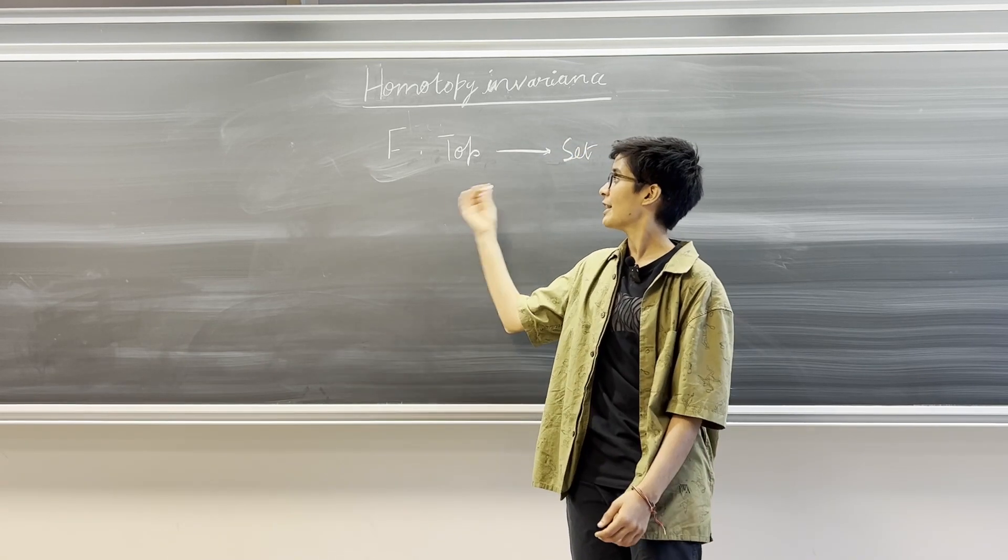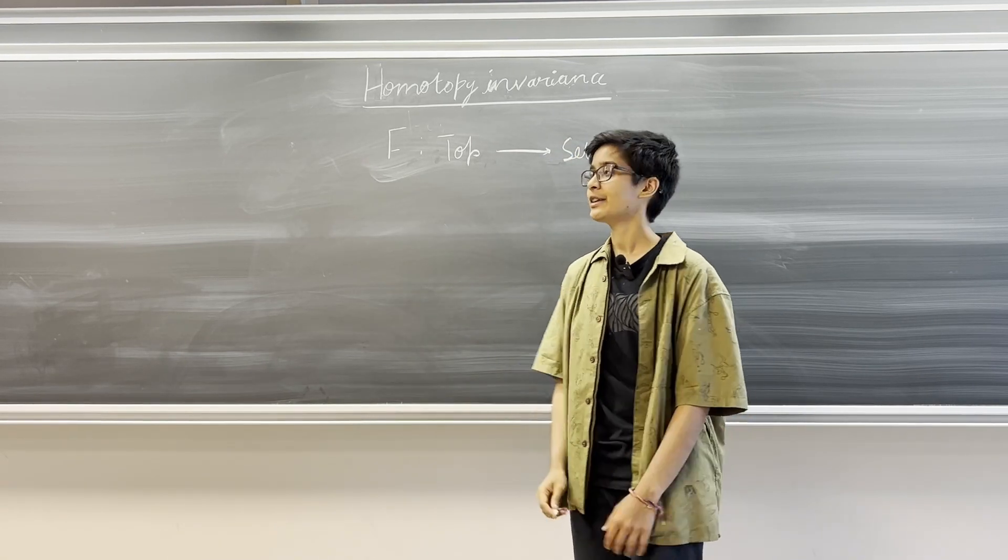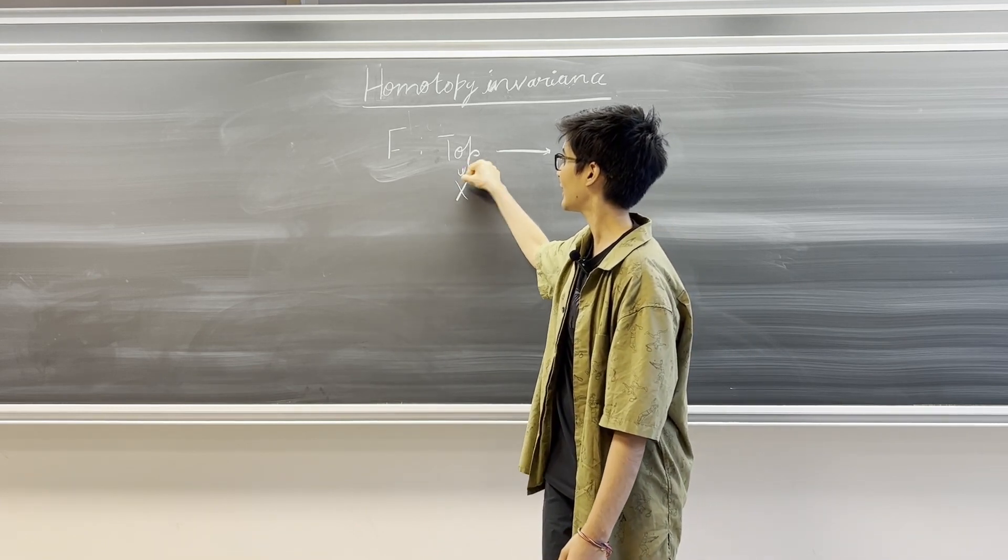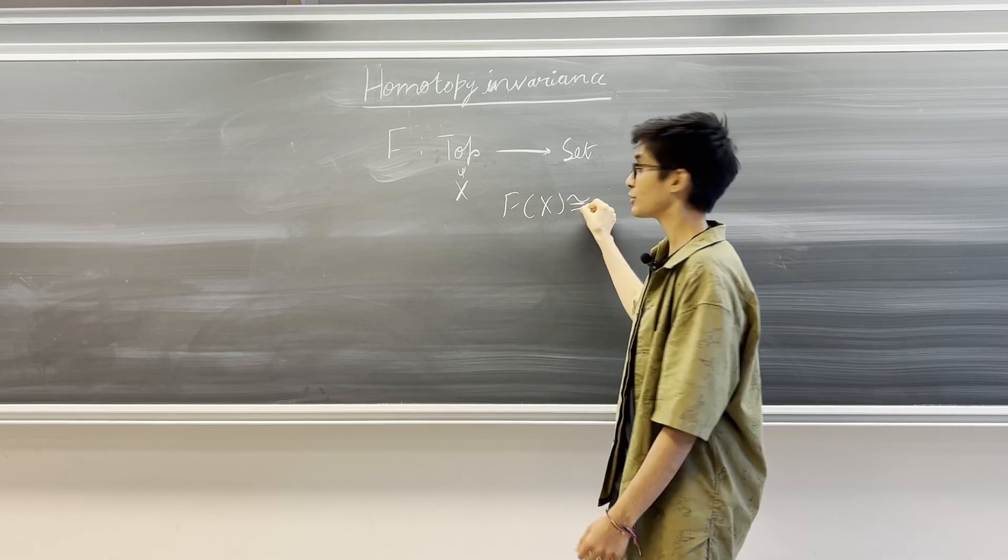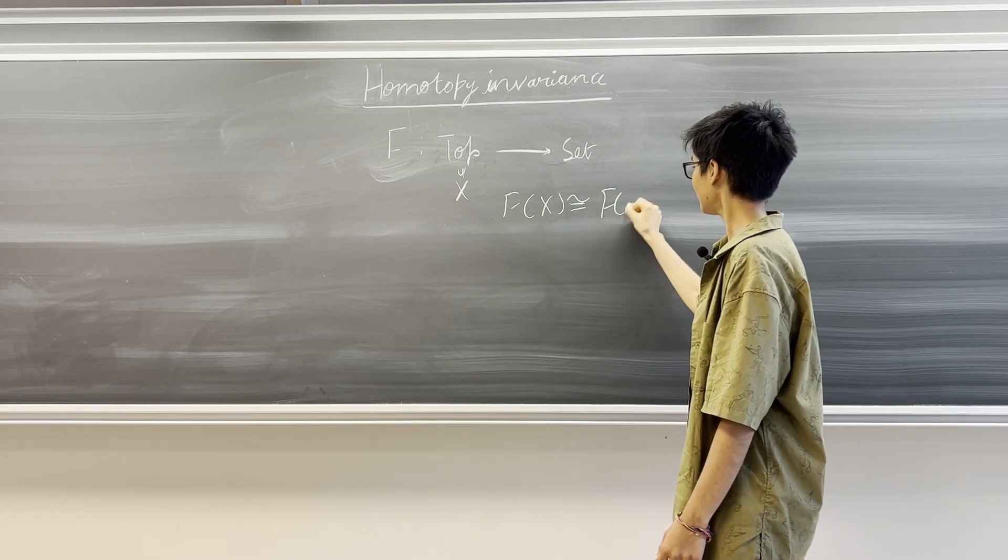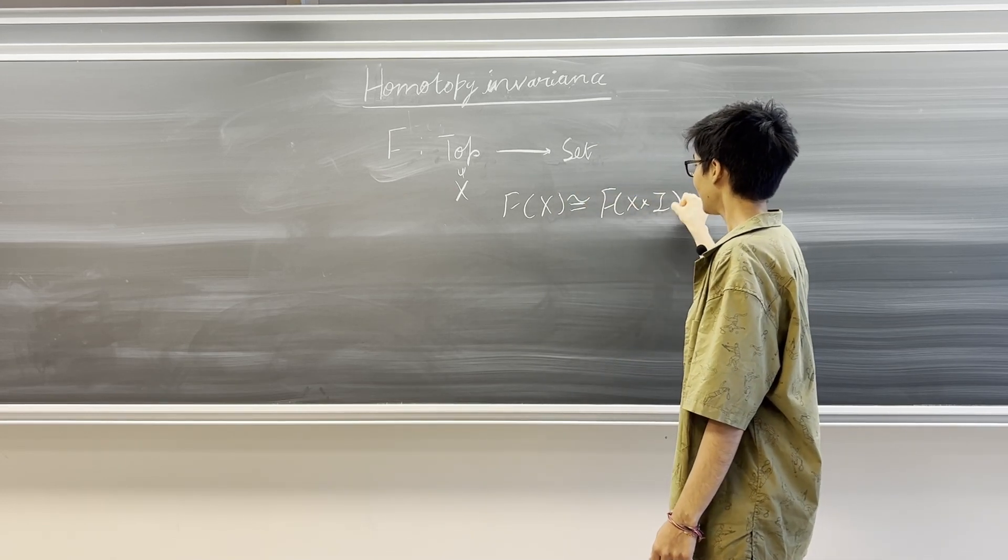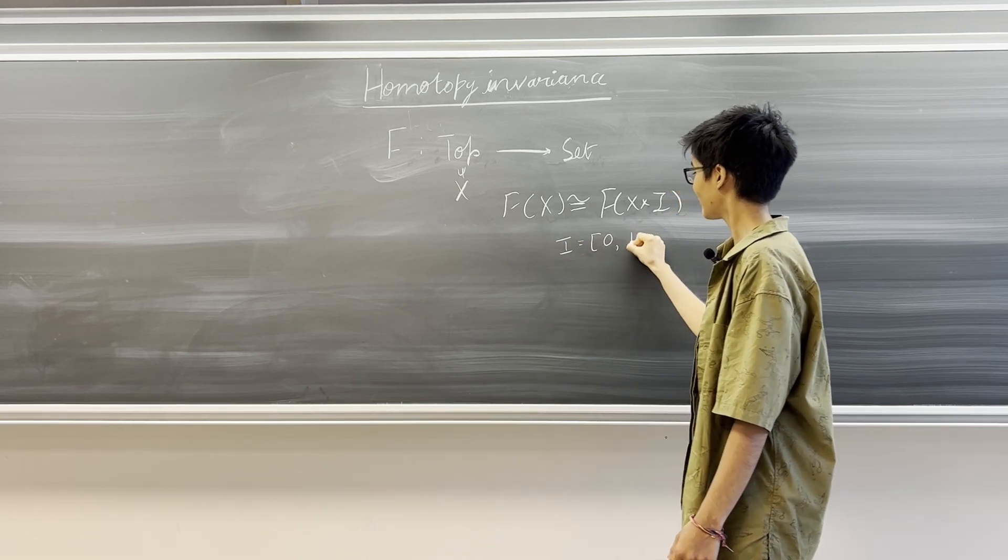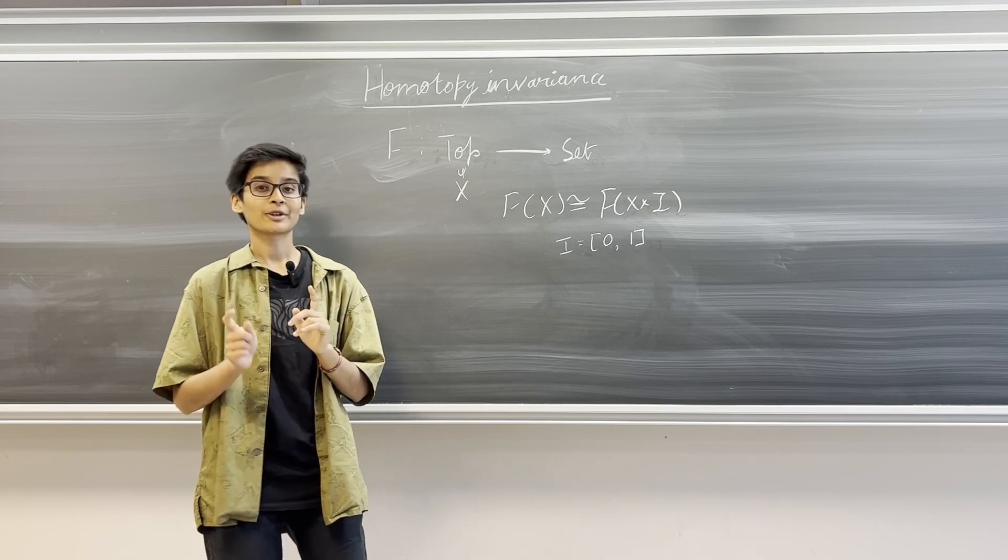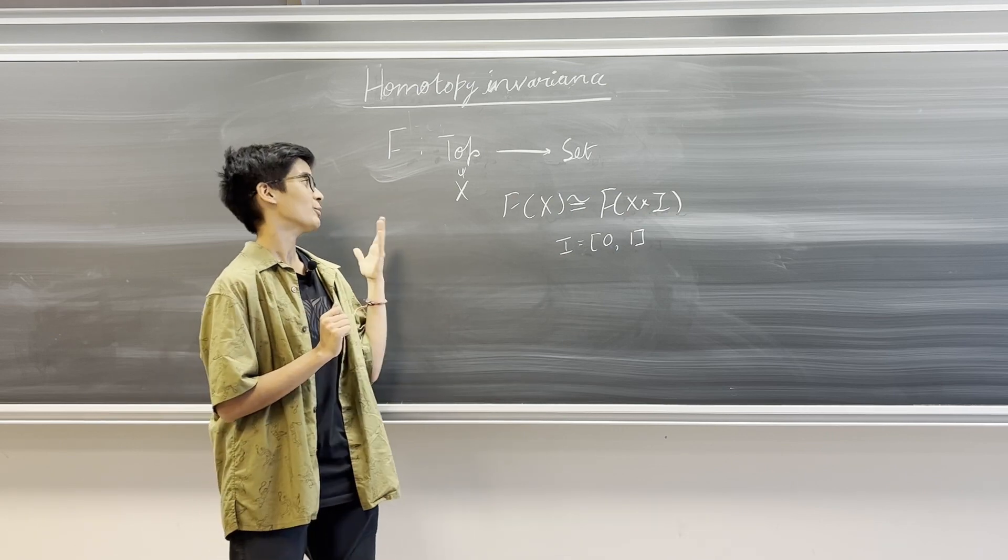We say that F is homotopy invariant if for any topological space X we have that F of X is isomorphic to F of X times I. Here, I is the unit interval from 0 until 1. We also require the same property to apply to morphisms.